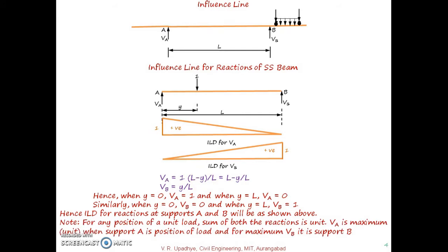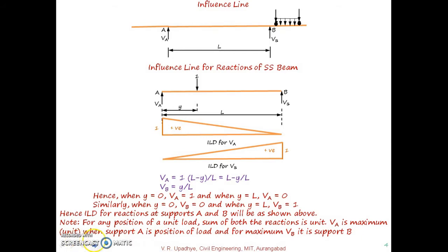For any position of the unit load, the sum of both reactions will be equal to 1. At any intermediate position of the unit load, if you calculate the magnitude of VA from the first influence line diagram and VB from the second, their sum equals 1. VA is maximum when the unit load is at support A, and VB is maximum when the unit load is at support B.